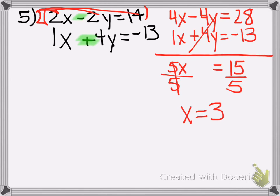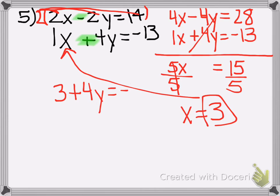And again, we're not finished. We have to actually plug it back in. I'm going to take it and plug it into the second equation because it's just 1x. So it's 3, since x is 3, plus 4y equals negative 13.